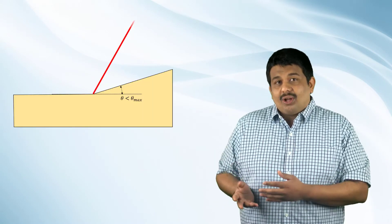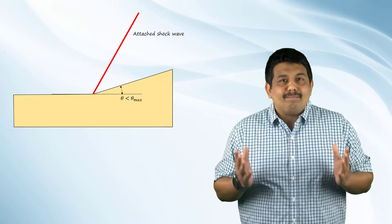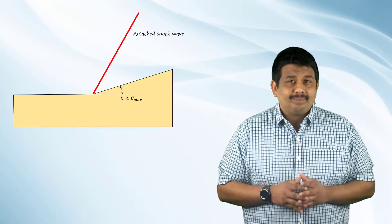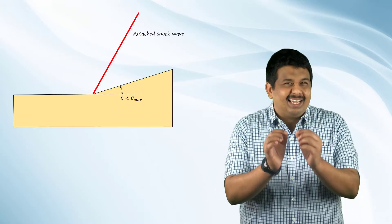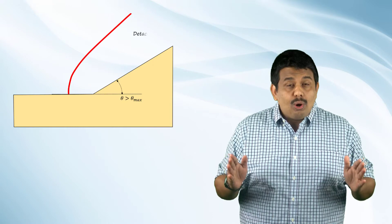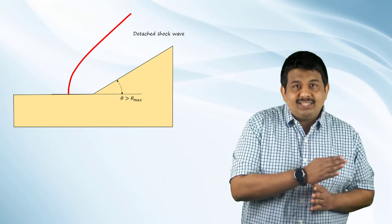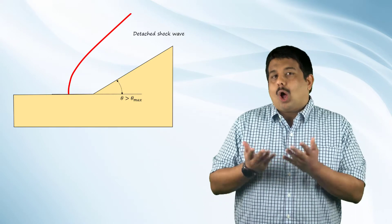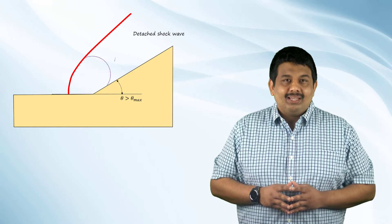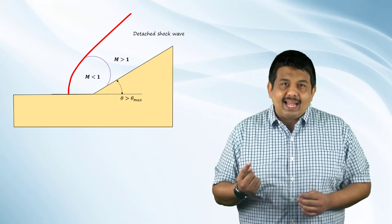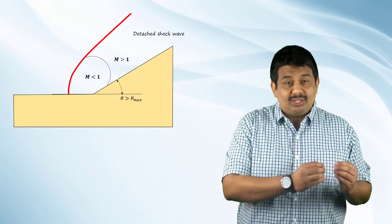If you recall from the theta-beta Mach number chart, we saw that for a given Mach number, there is a maximum value of theta that is possible for the flow to turn. What if the deflection angle is greater than this maximum? In such a case, the shock wave will no longer be attached to the object but instead will move upstream and form a detached curved shock, also known as a bow shock. The flow behind the shock will be subsonic near the corner and slowly accelerate to supersonic further down the surface.